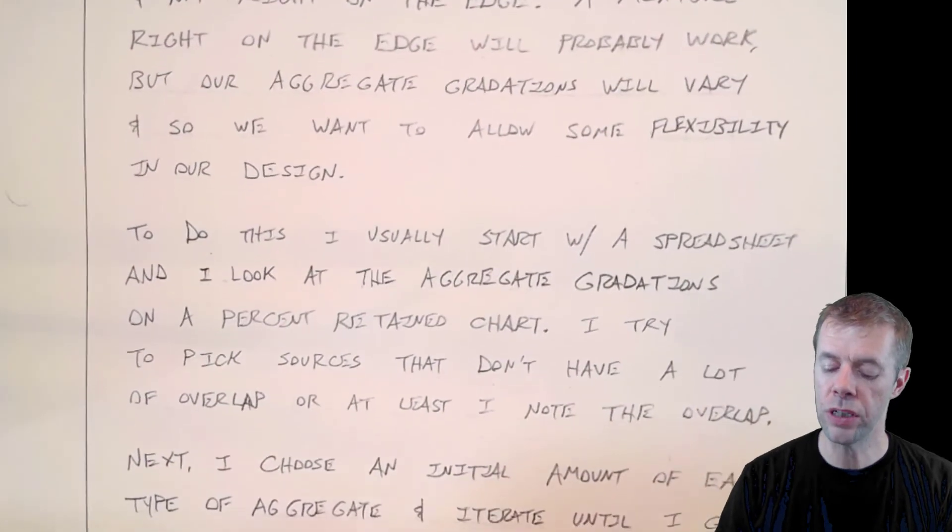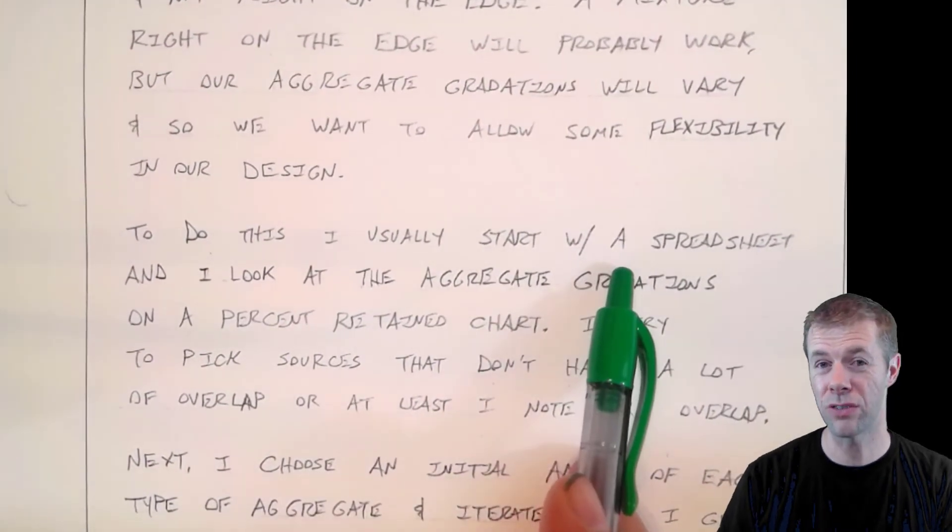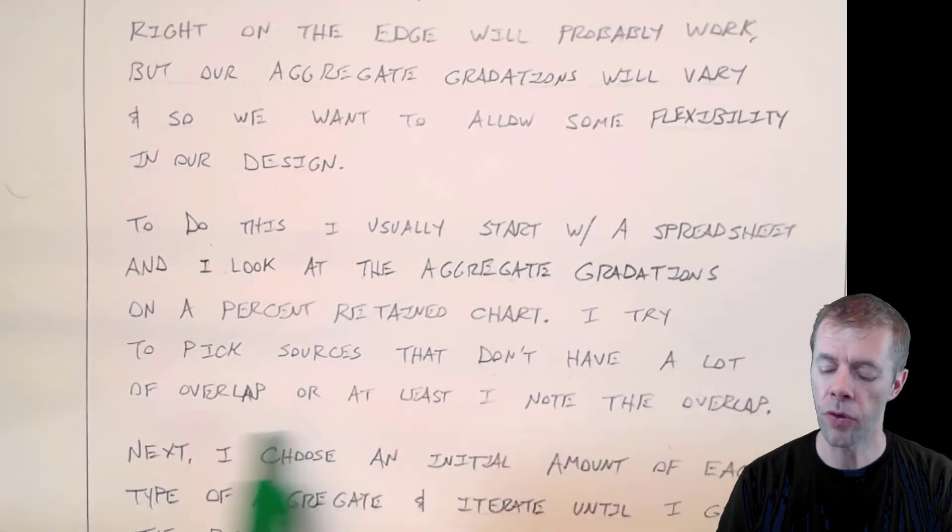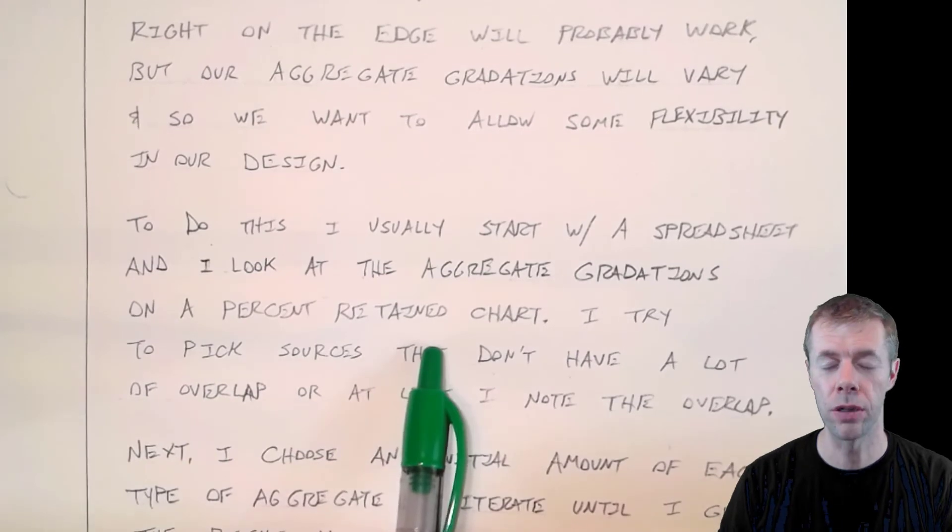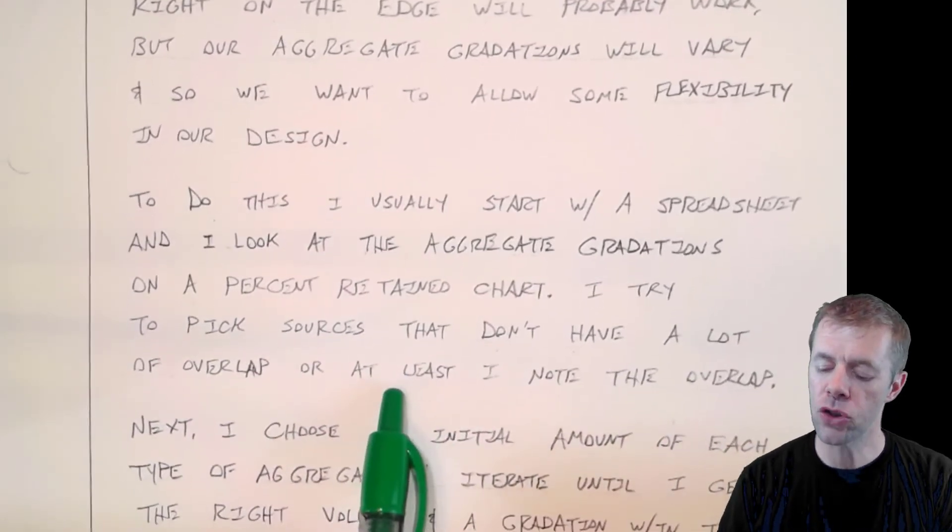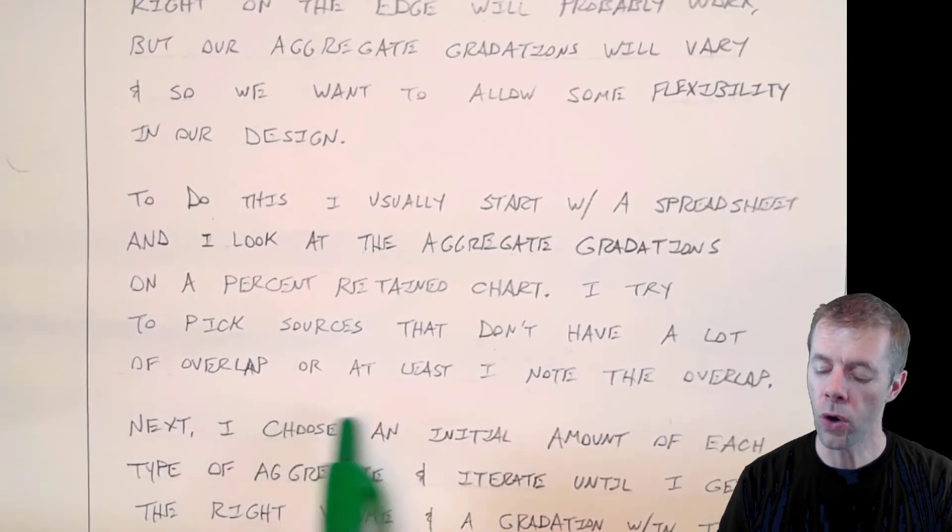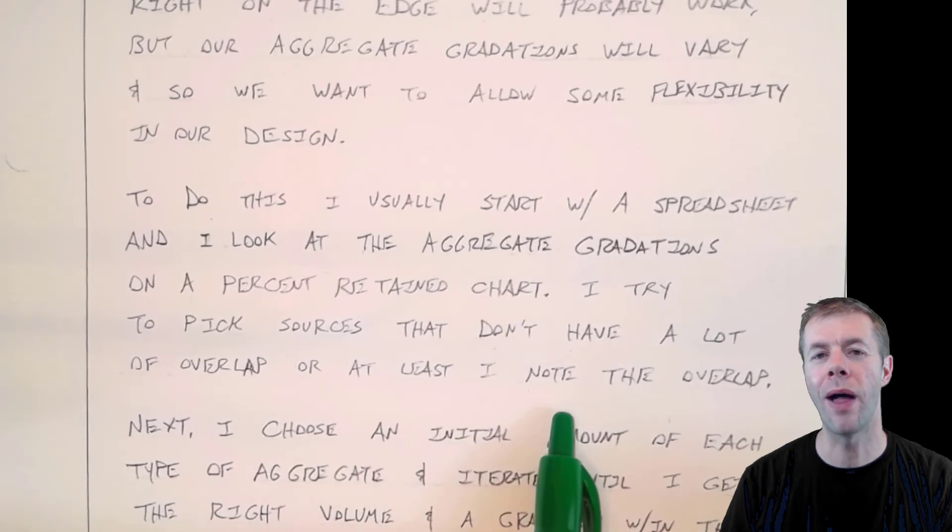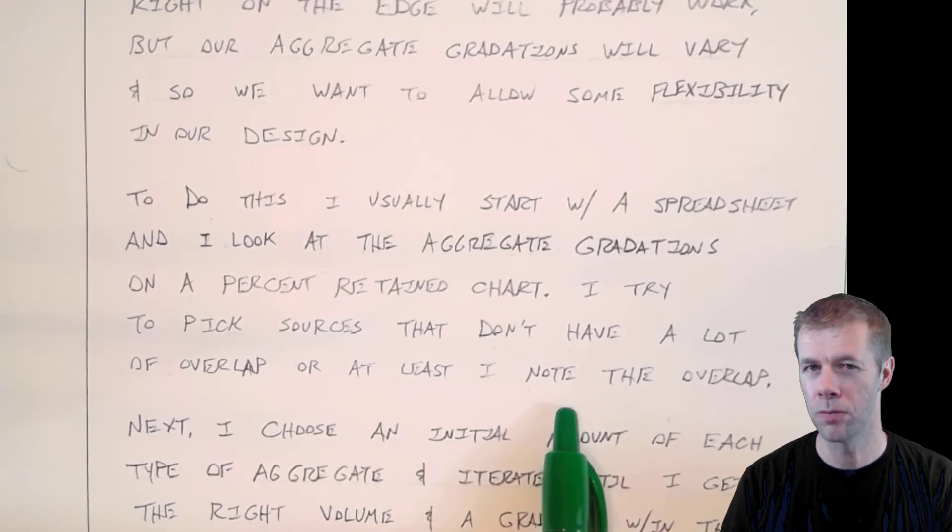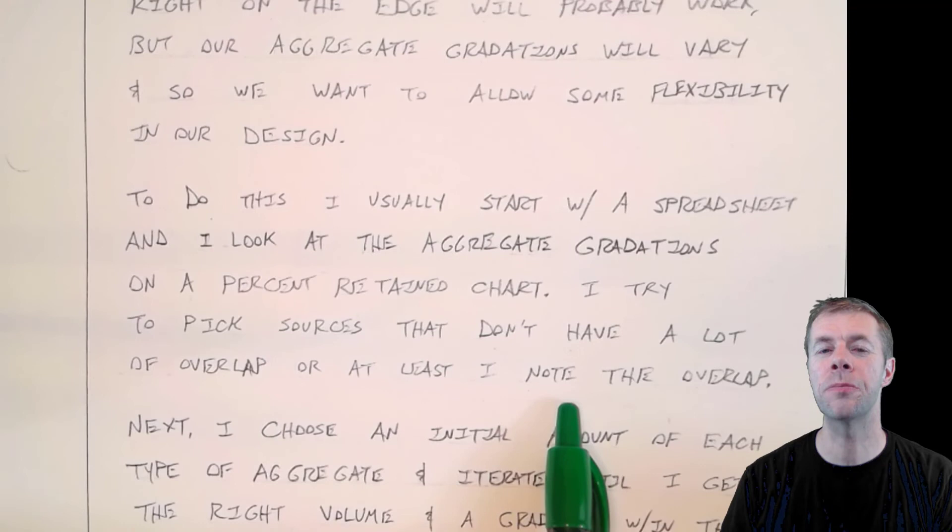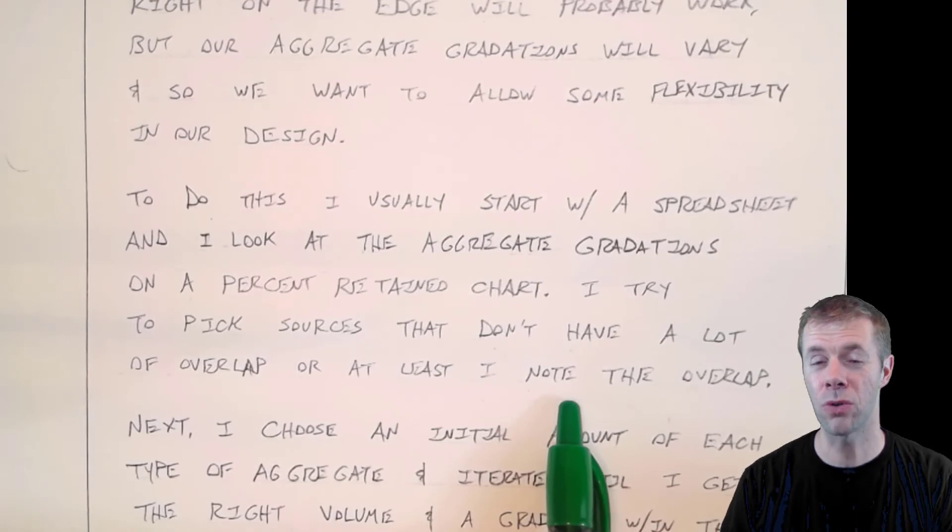So, to do this, I usually use a spreadsheet. And we're going to do this in the next video, where we actually work an example problem together. And I look at the aggregate gradations on something called the percent retain chart. And I try to pick sources that don't have a lot of overlap at different sizes. Or at least I know what the overlap is. I'm going to talk about this in the next video. But this is really important. Because a lot of overlap means you're at a high spot on the Tarantula Curve. And a high spot on the Tarantula Curve means you're going to have constructability problems.